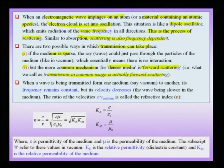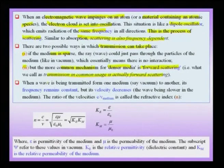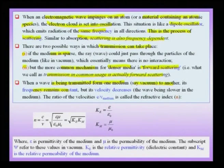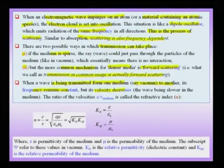When a wave is transmitted from one medium to another — say from vacuum to glass — the frequency remains constant. What changes when a wave propagates from a rarer medium to a denser medium is the velocity of the wave. The velocity of the wave decreases, and the ratio of the velocity of light in vacuum — a fundamental constant c — divided by the velocity in the medium is what we call the refractive index in common language.